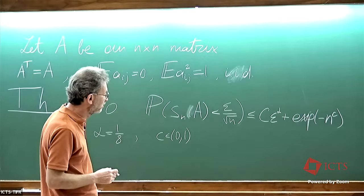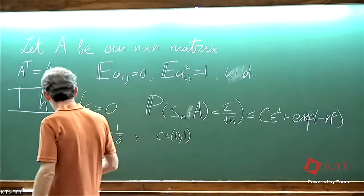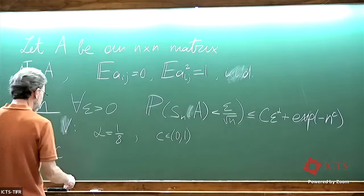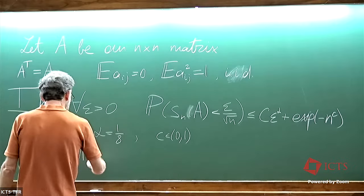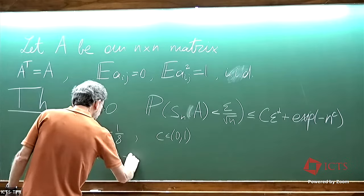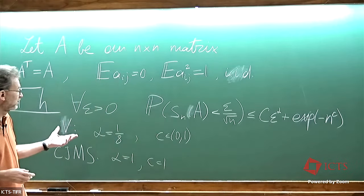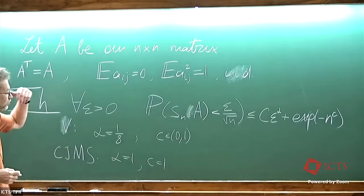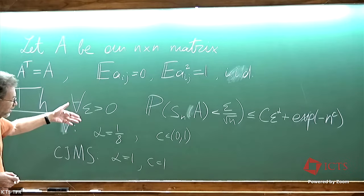The optimal bound should be at alpha equals 1 and C equals 1, and this bound was established very recently, this year, by Campos, Jensen, Marcus, and Sastra Budde. C equals 1, and this is universal in the sense that it applies to all such random matrices without further restrictions on entries.